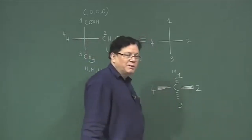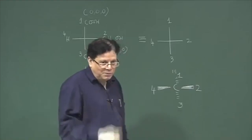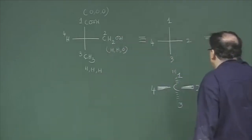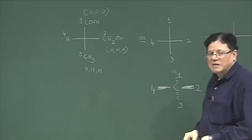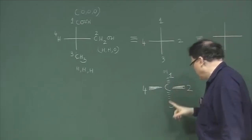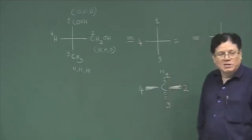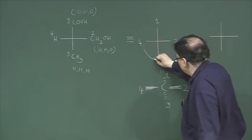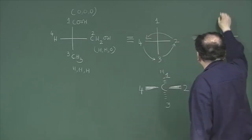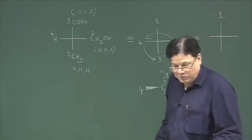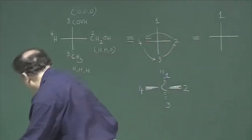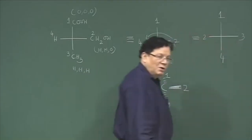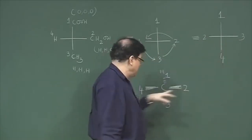How to deal with this situation? There are different ways people can directly assign the RS configuration. One approach: you know that exchange in a group of three is allowed. What you need is to bring the fourth group into one of the vertical positions by exchanging a group of three. If you do that — bring four here, three there, and two there — you do not change the molecule because that is allowed according to the rules of Fischer projection. So you do that, and four becomes there, three becomes there, two becomes there. It is the same molecule, but now the fourth group is in the alpha position.